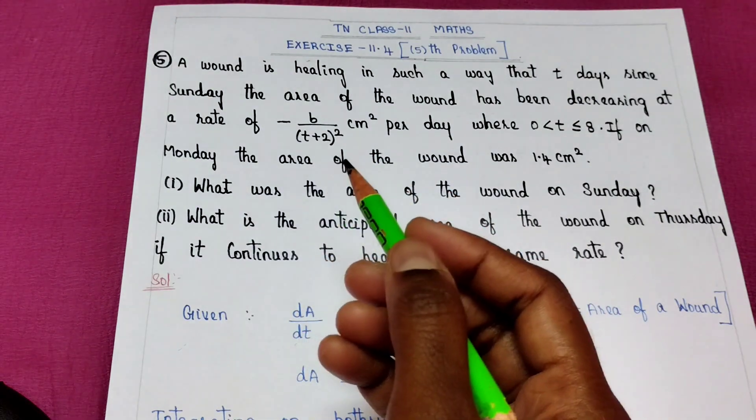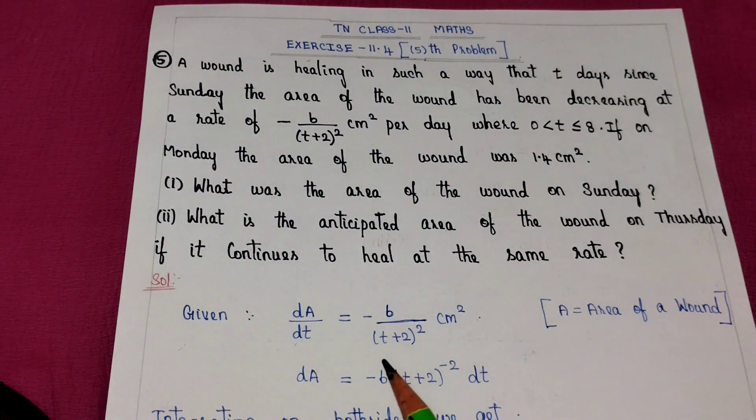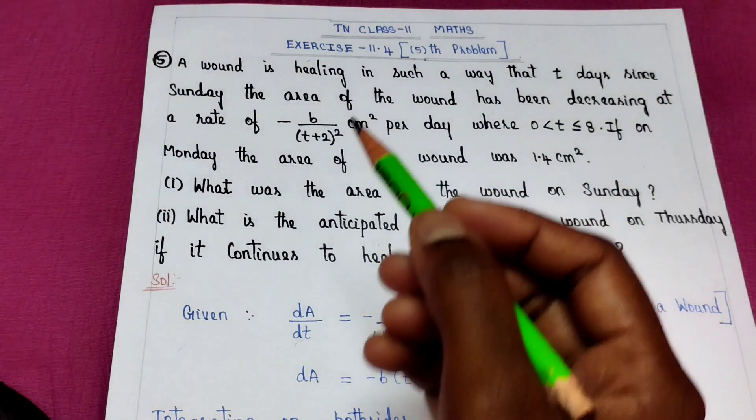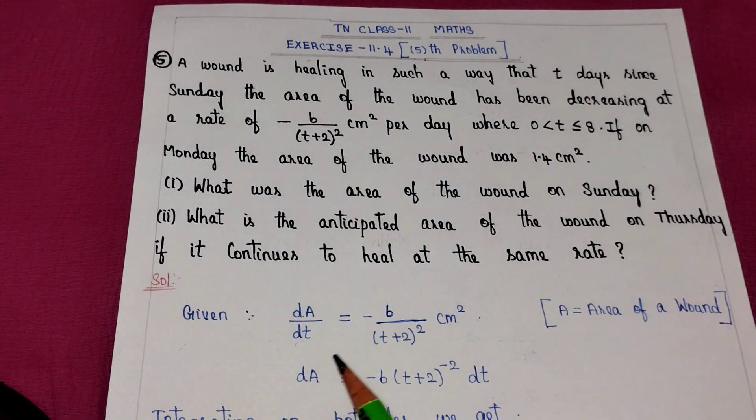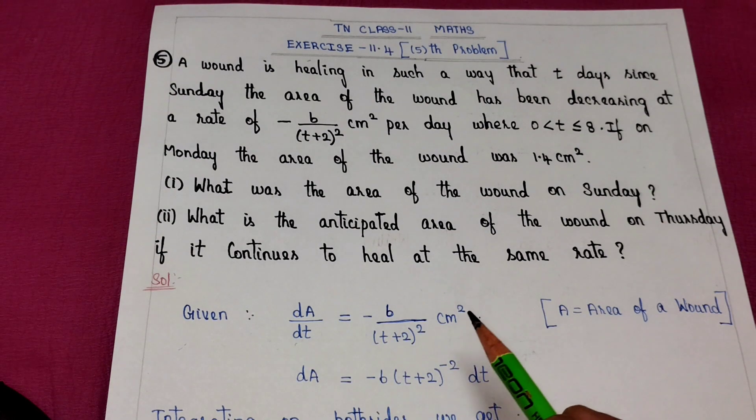The rate is minus 6 by t plus 2 whole square. This rate is the rate of change of area with respect to t. So dA divided by dt equals minus 6 by t plus 2 whole square centimeter square dt.